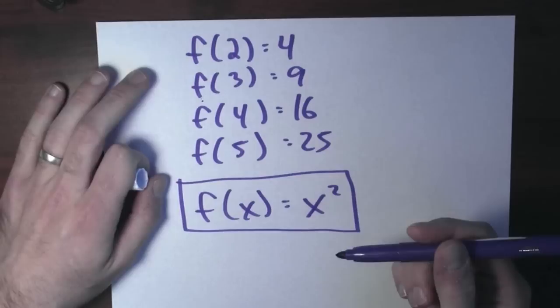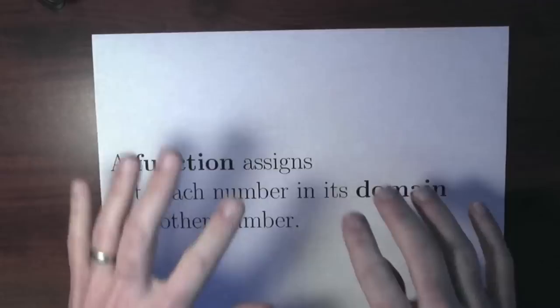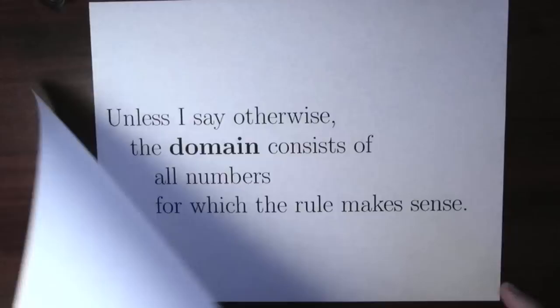A lot of times, when you actually want to talk about how these assignments are being made, you use some sort of rule like this, and you write f of x is something to compute the output value. So a function assigns to each number in its domain another number — one way to do that is with a rule. This definition of function involves another word: domain. Unless I say otherwise, the domain consists of all numbers for which the rule makes sense — it's just the numbers that I can plug in.